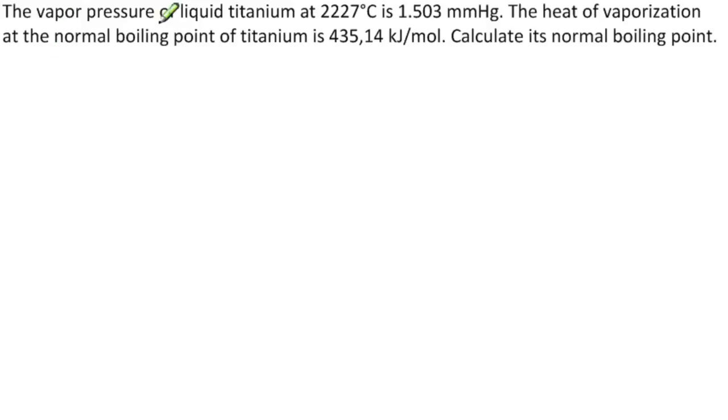The problem reads, the vapor pressure of liquid titanium at 2,227 degrees Celsius is 1.503 millimeters mercury. The heat of vaporization at the normal boiling point of titanium is 435.14 kilojoules per mole. Calculate its normal boiling point.